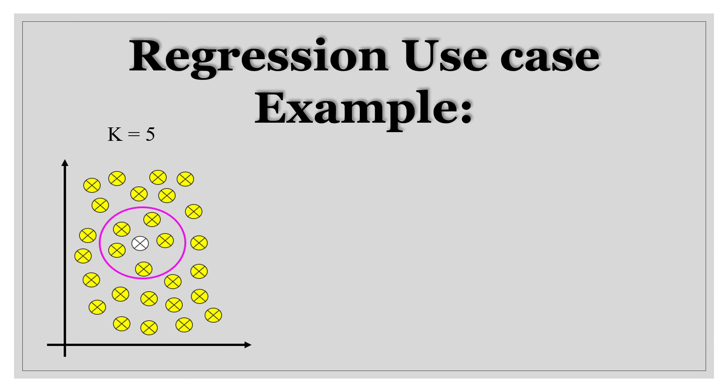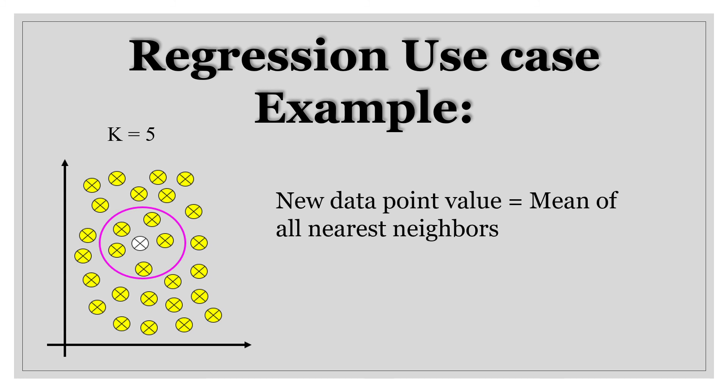Let us see an example of a regression use case. In regression, I do not have two classes, so how do we classify my unknown data point? Let us also consider K equal to 5. In regression, we actually calculate the mean of all of the nearest neighbors, and the mean value will be equal to the value of the new data point.